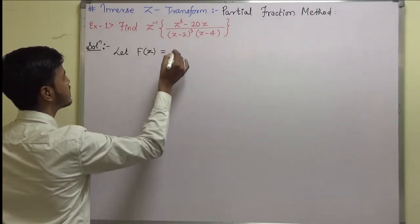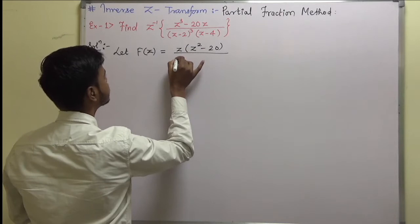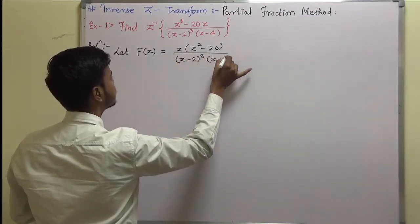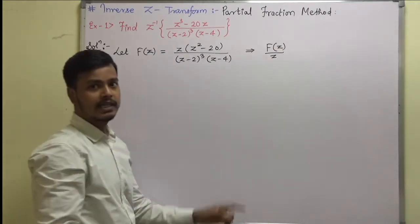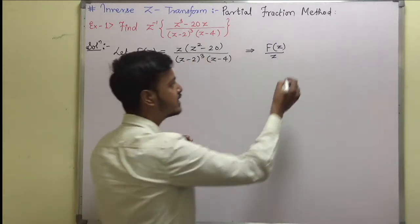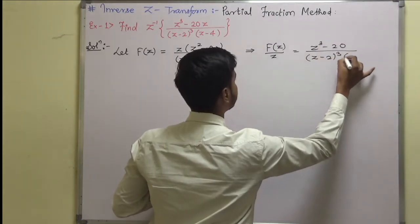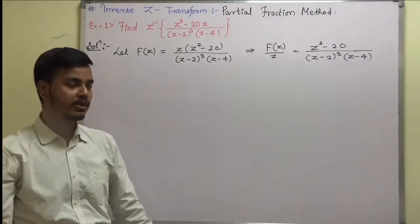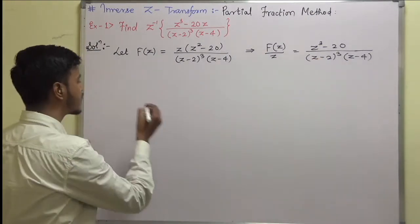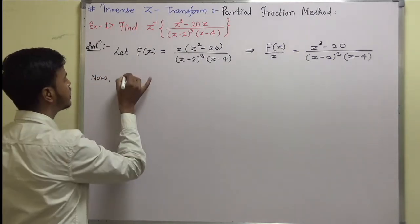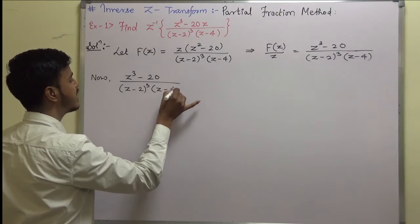So what is my f(z)? Here I can take z common: z into (z² - 20) upon (z - 2)³ into (z - 4). This can also be written as f(z)/z, taking this z to the left, and we remain with (z² - 20) upon (z - 2)³ into (z - 4). Our objective is to represent this complex fraction in terms of partial fractions.